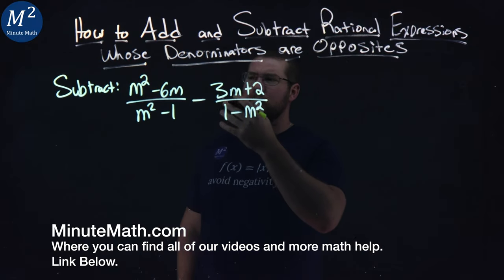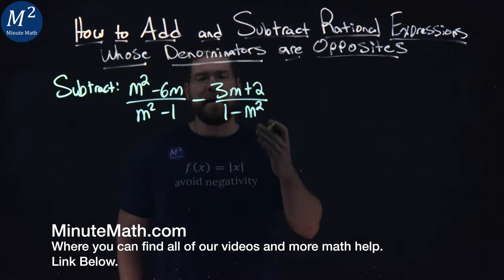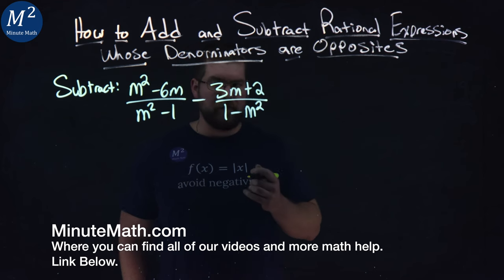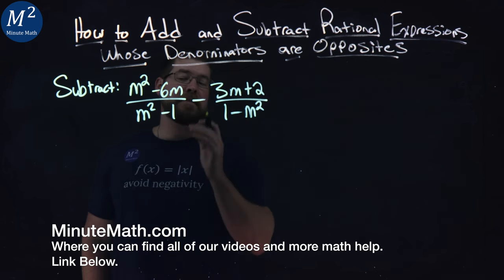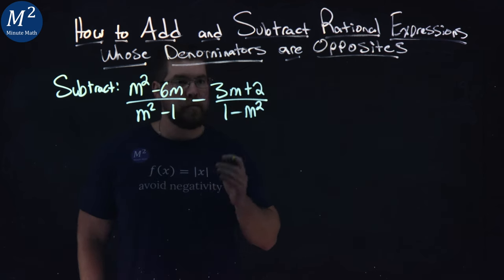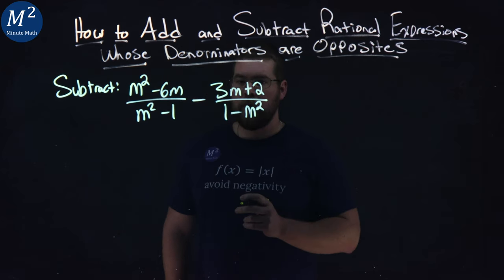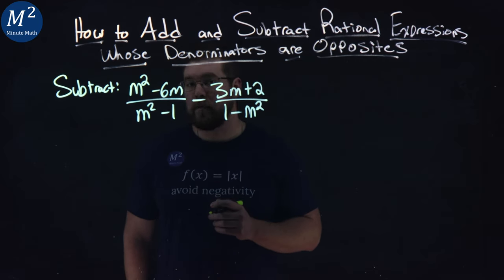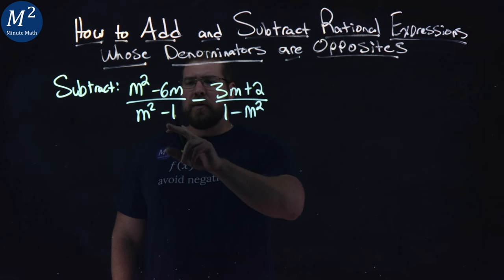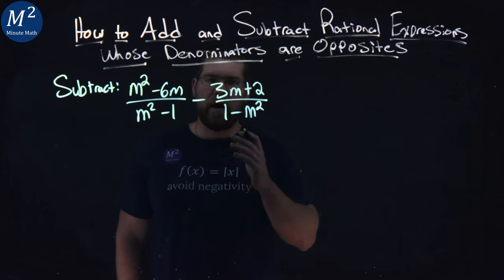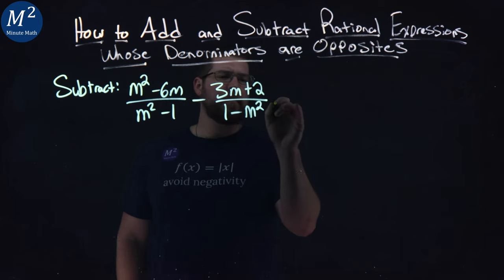We're given this problem here, we're subtracting two rational expressions, and again the denominators are opposites. We have m squared minus 6m over m squared minus 1 minus 3m plus 2 over 1 minus m squared. Notice these denominators are very close, but they're not the same, they're opposites. What can we do?